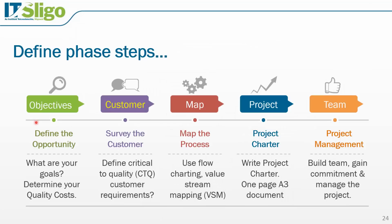We've now looked at goals and quality costs. Next, we're going to focus on the customer. You could survey the customer — there's a link on the website to free survey software from Poll Daddy. We won't go into that in detail, but now we need to define the critical-to-quality customer requirements.